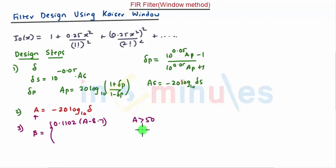When A lies between 21 and 50, the value is 0.5842 times (A minus 21) to the power 0.4 plus 0.07886 times (A minus 21). Finally when A is less than 21, beta is 0.